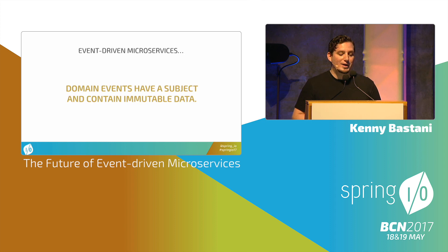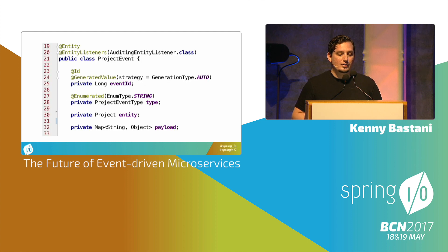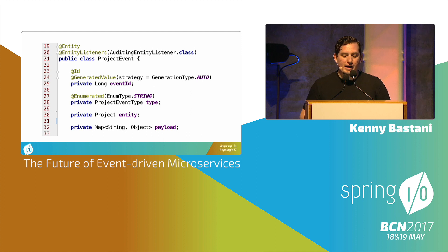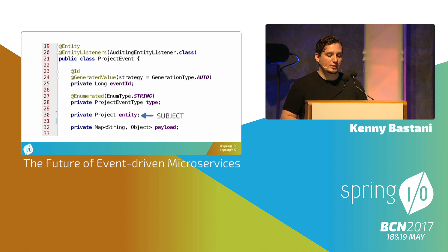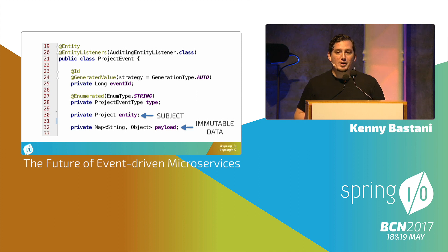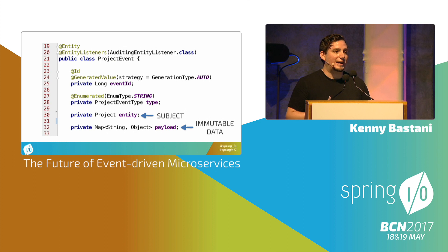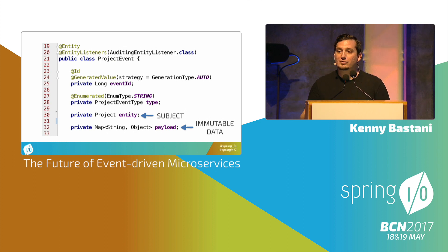Each domain event has a subject and contains some immutable data. Here I have a project event with a subject — my project aggregate — and a payload of immutable data. Each one of these events is added to a log in the order that they were processed. This event log can be used to roll back state in the system.